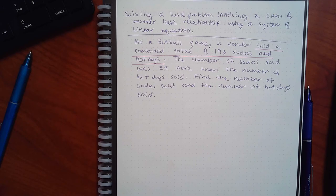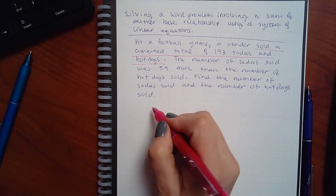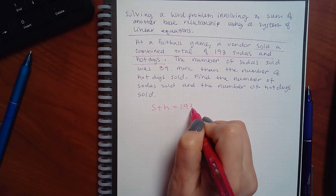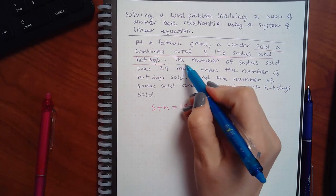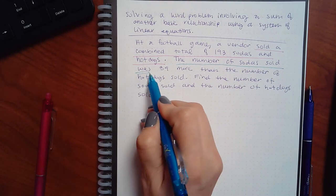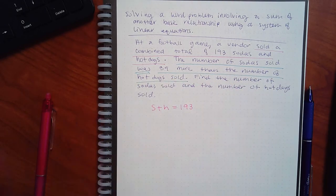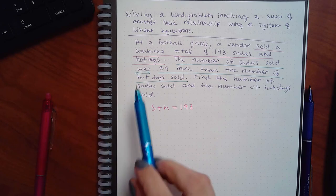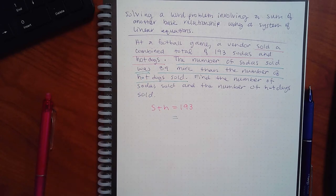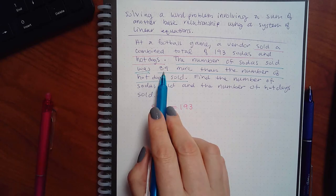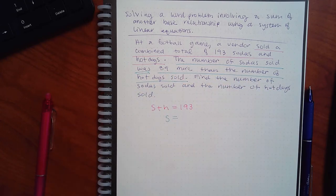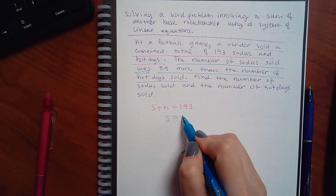How do I write that as an equation? The combined total of 193 sodas and hot dogs: S plus H equals 193. Now the second sentence says the number of sodas sold was — that word 'was' is important — 39 more than the number of hot dogs sold. If you see the word 'was' or 'is,' that is your equal sign. So S equals 39 plus H.